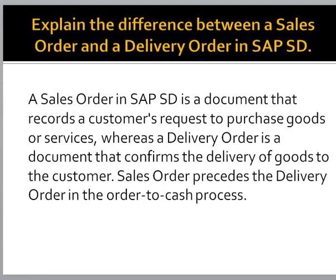Explain the difference between a sales order and a delivery order in SAP SD. A sales order in SAP SD is a document that records a customer's request to purchase goods or services, whereas a delivery order is a document that confirms the delivery of goods to the customer. The sales order precedes the delivery order in the order to cash process.